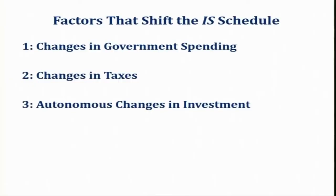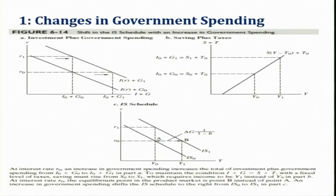We are going to discuss the factors that shift the IS curve. There are several factors that affect the IS curve. We summarize and narrow down to three major factors: one is changes in government spending, second is changes in taxes, and third is autonomous changes in investment.